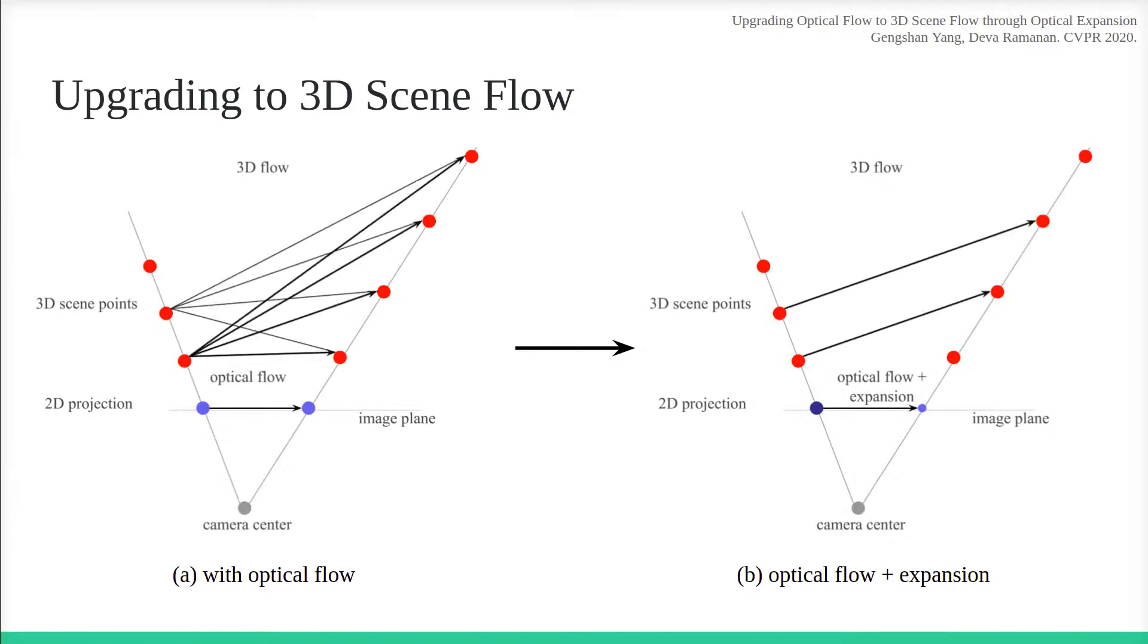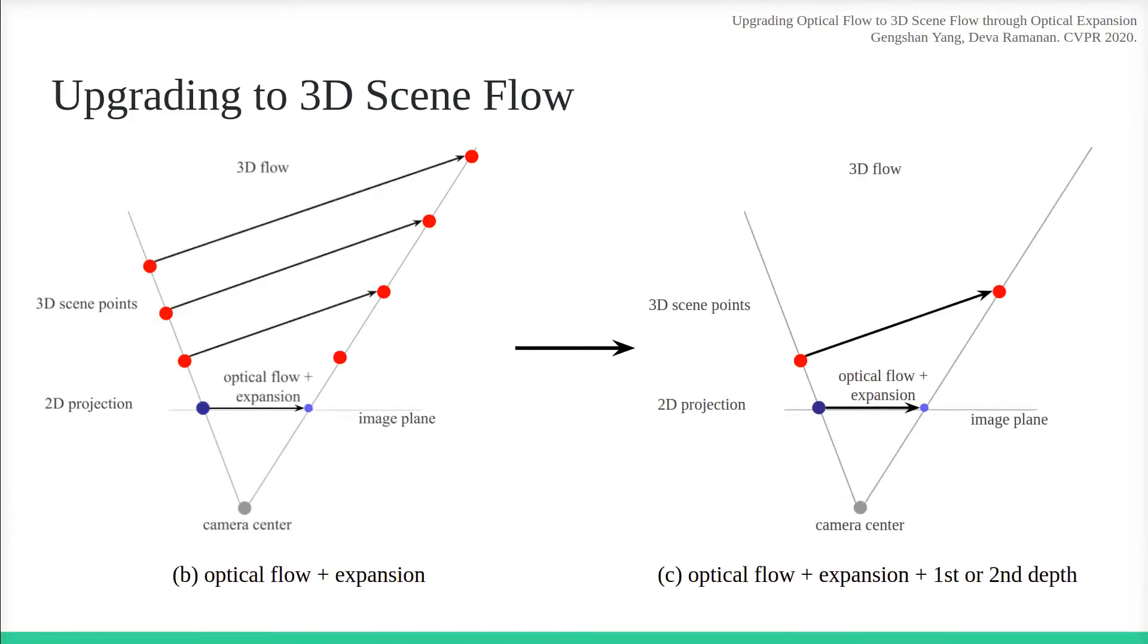This produces a family of candidate 3D flow vectors facing the same direction, but with different scales. By specifying the depth of one point in the correspondence pair, one can resolve the final ambiguity.